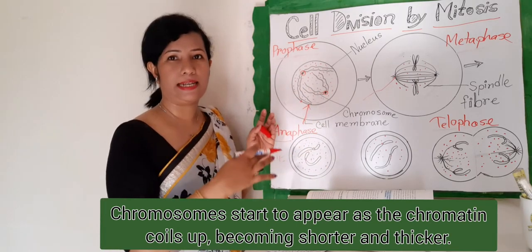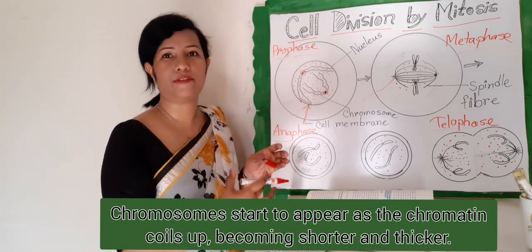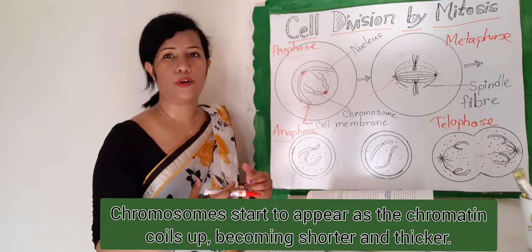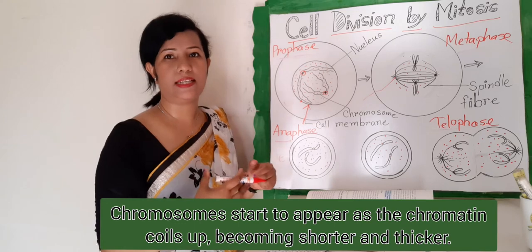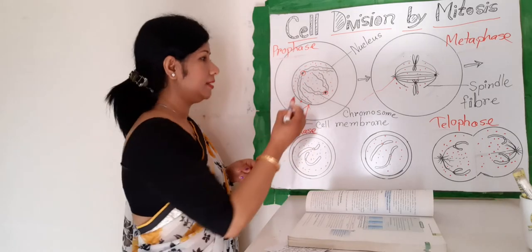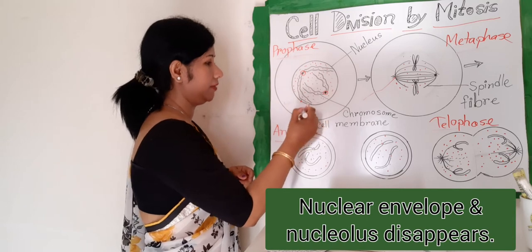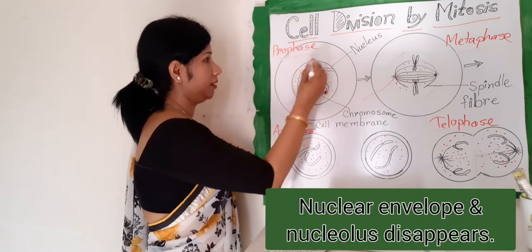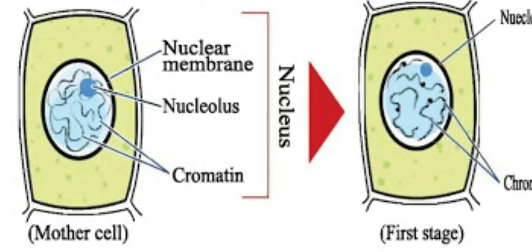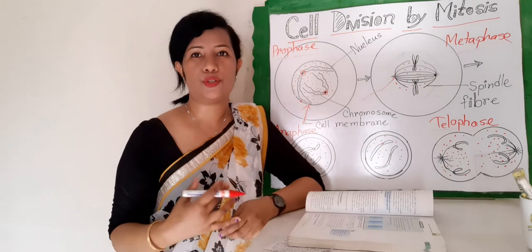Chromosomes start to appear as the chromatin coils up, becoming shorter and thicker until they are thick enough to become visible when stained. The nuclear envelope disappears, and the nucleolus also disappears.